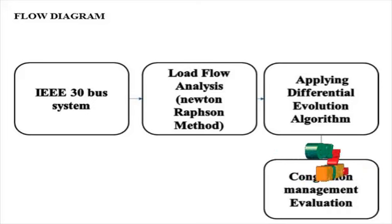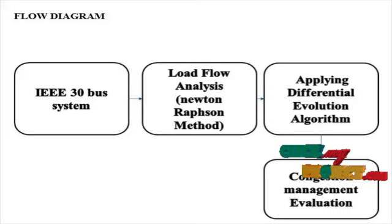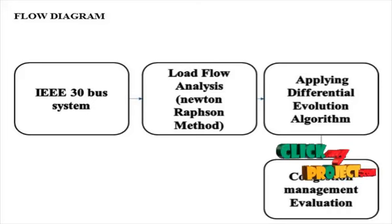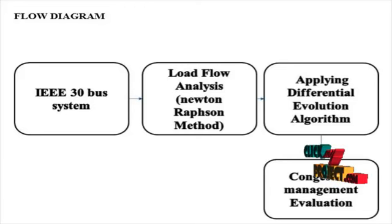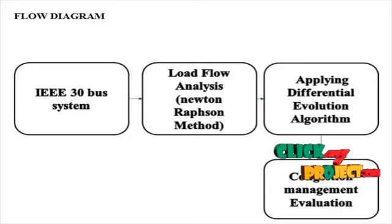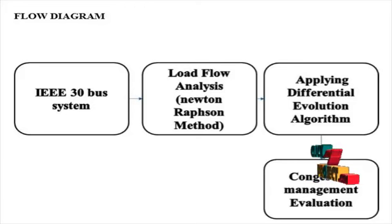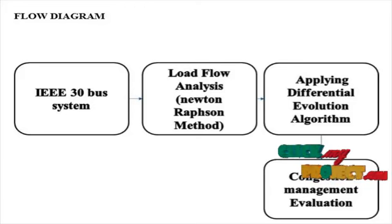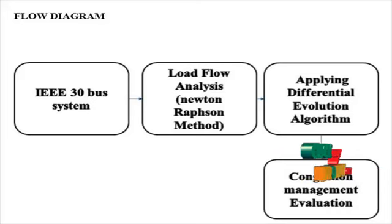First module: the IEEE 30 bus system. It consists of six generators, 24 load buses, and 41 transmission lines. Congestion is created by outaging of a transmission line and increasing the load at certain buses — using these two processes, congestion is made.